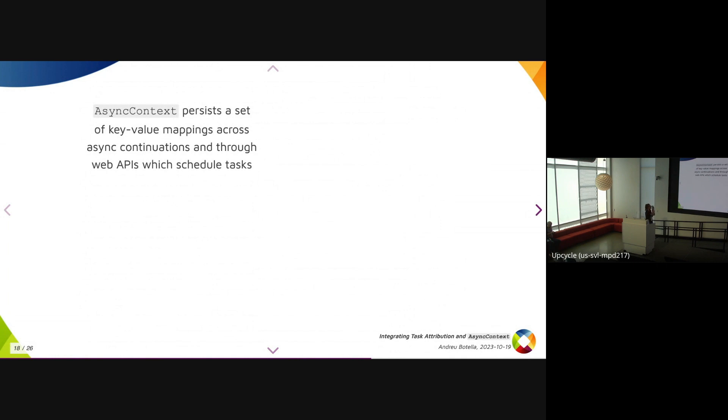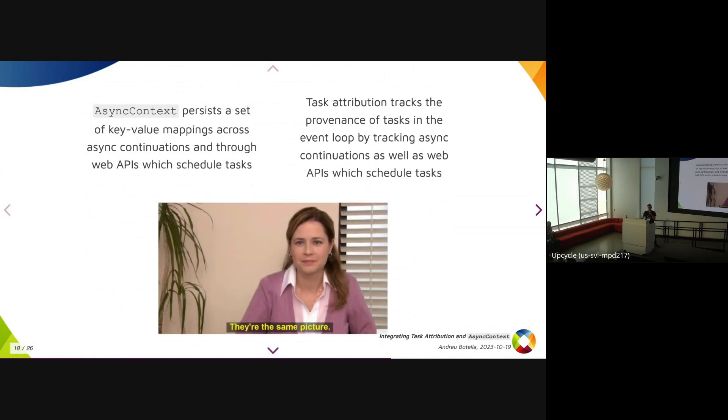So as a bit of a recap, async context persists a set of key-value mappings across async continuations and through web APIs with scheduled tasks. Task attribution tracks the provenance of tasks in the event loop by tracking async continuations as well as web APIs with scheduled tasks. They're the same picture.